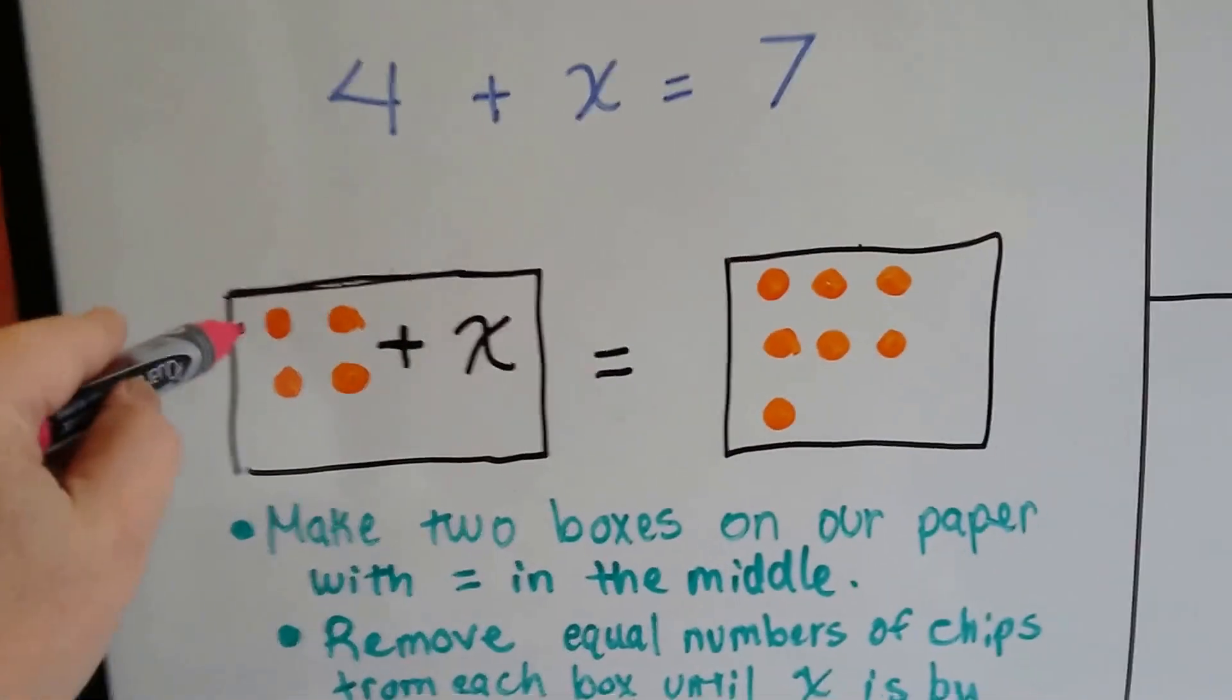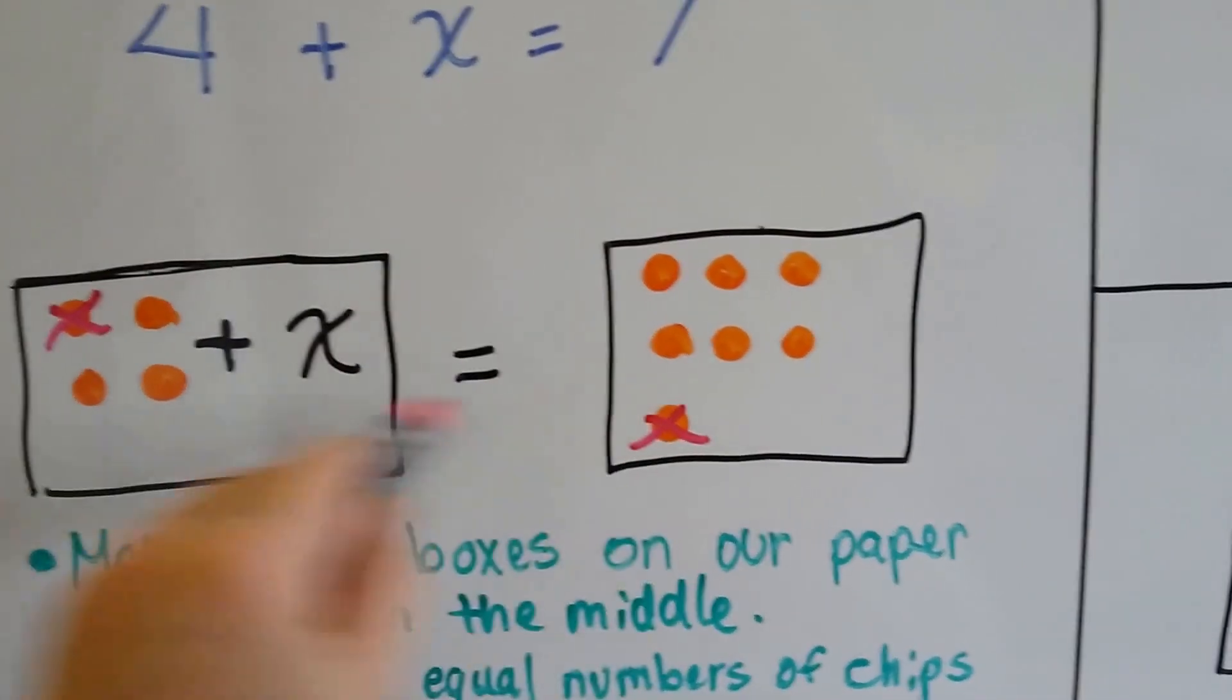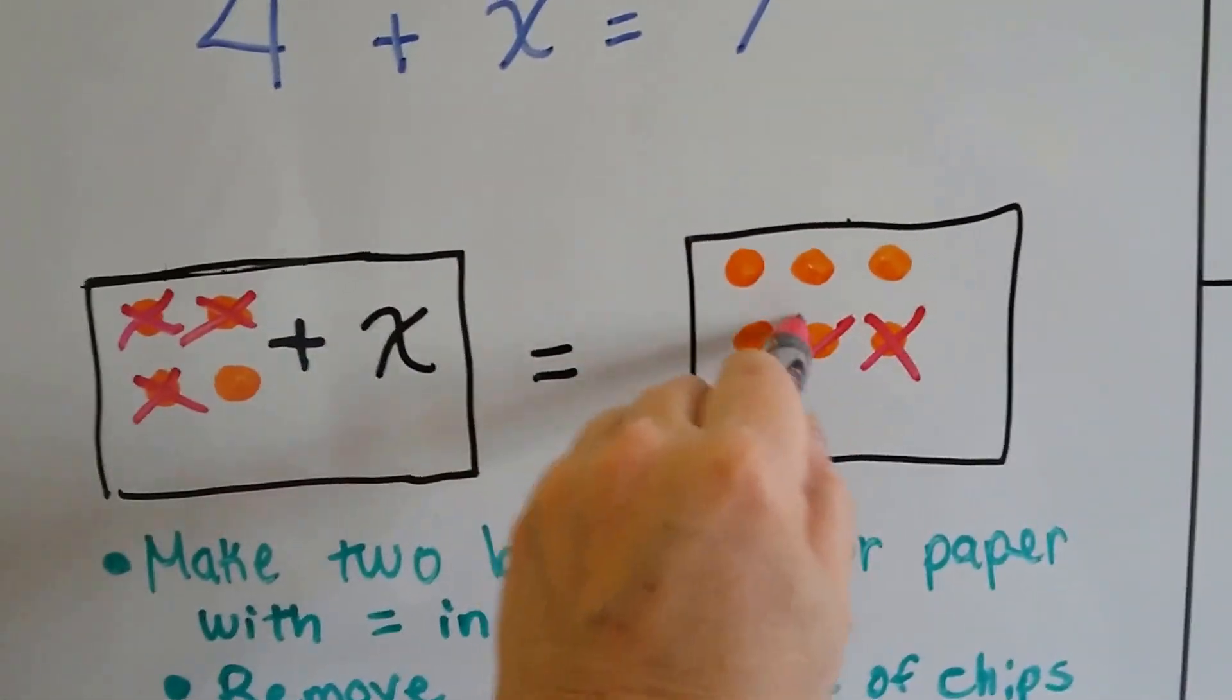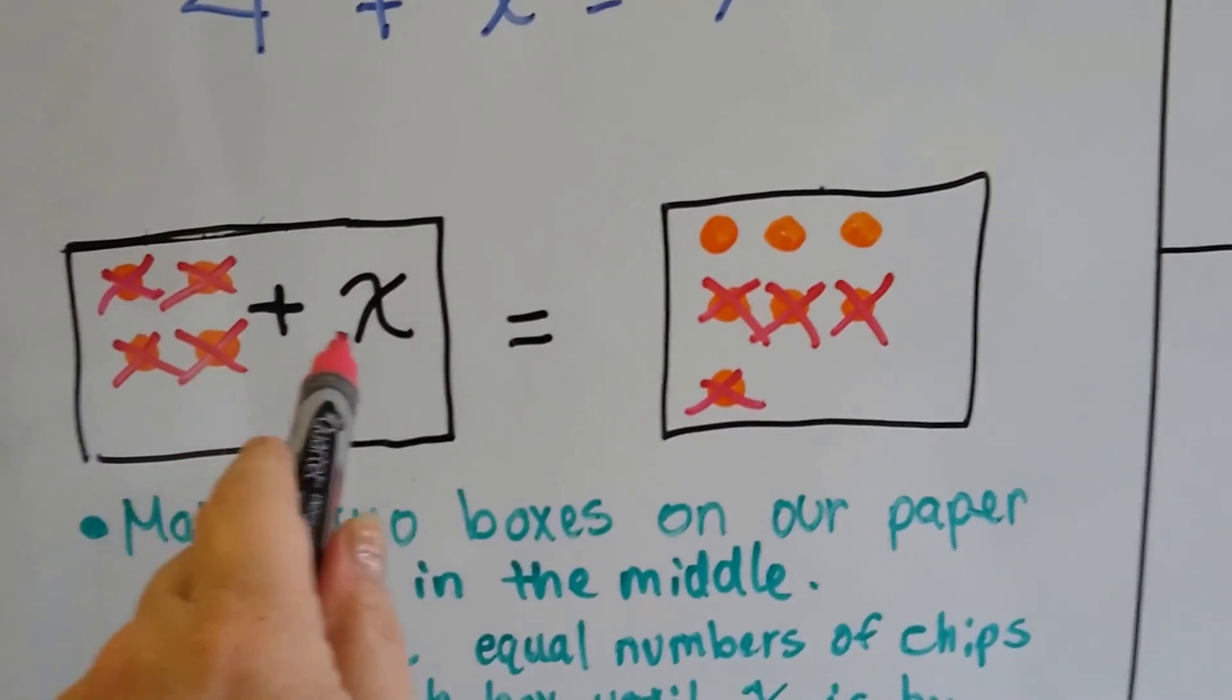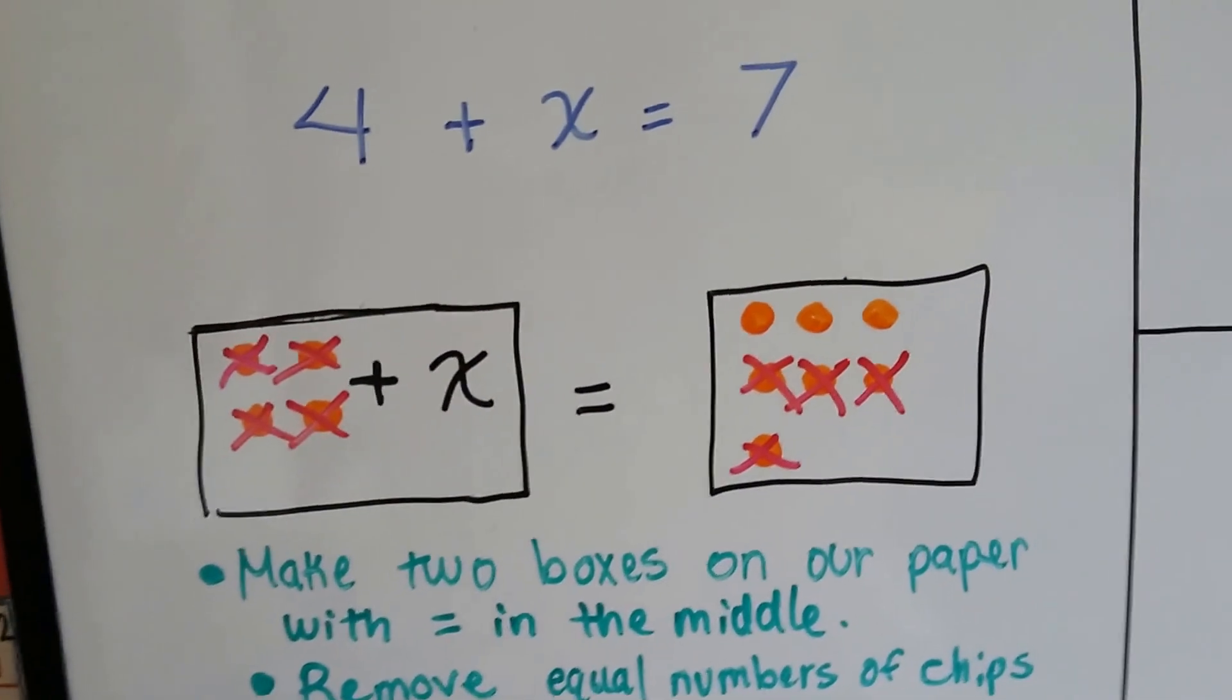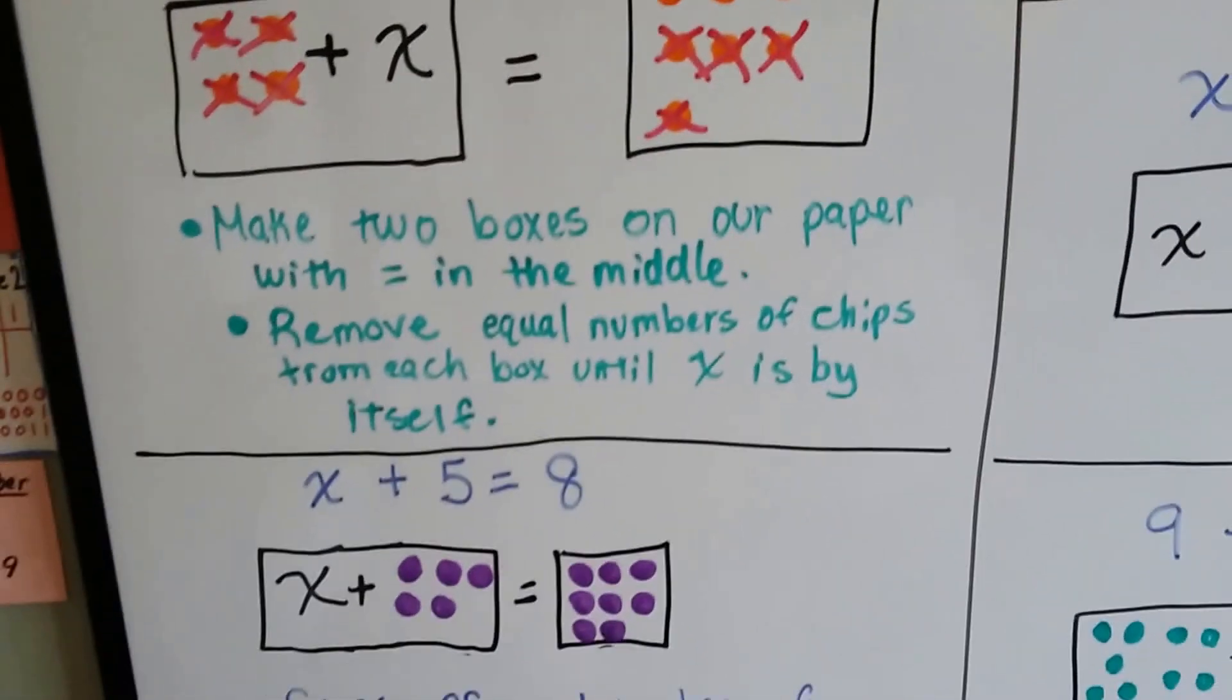Then we remove chips equally from each side, taking turns until x is by itself and we see what is on this side of the equal sign. The answer is 3. Isn't that easy?